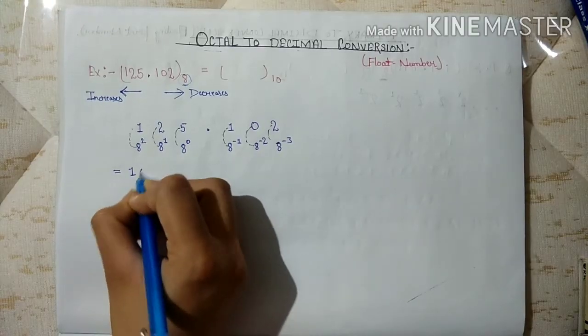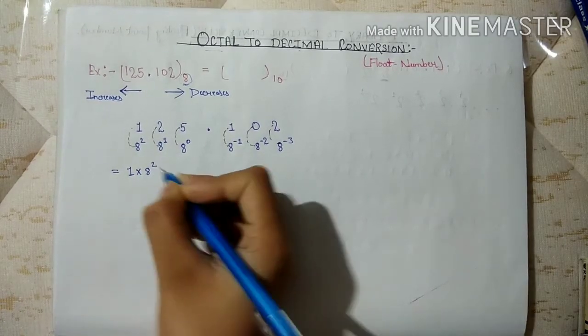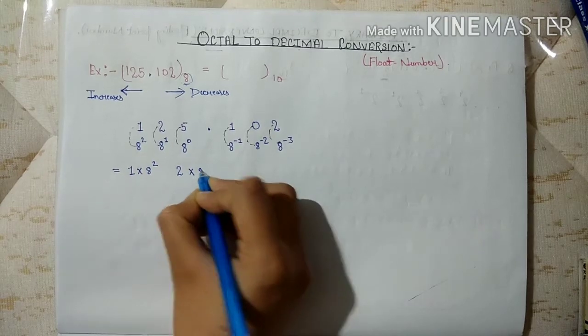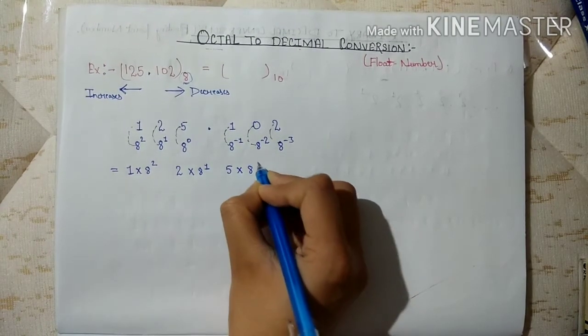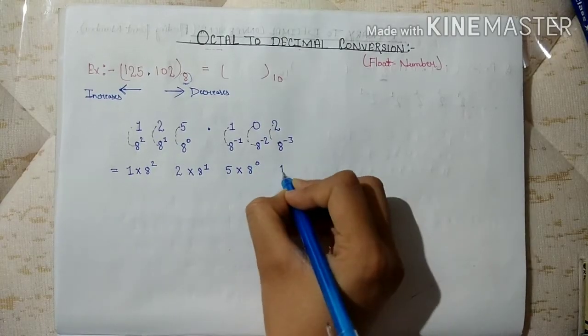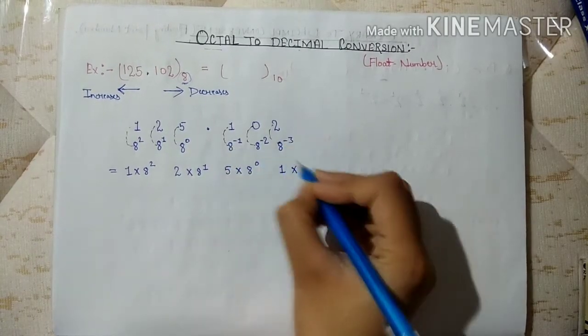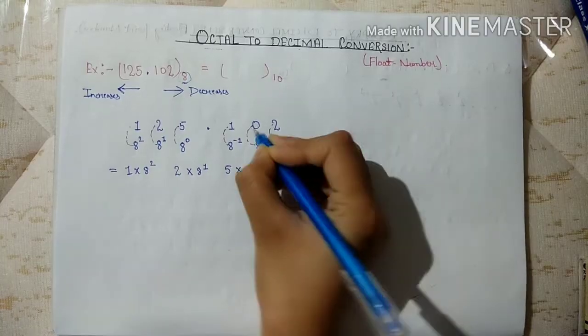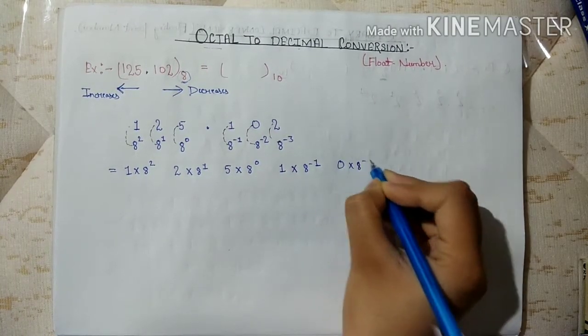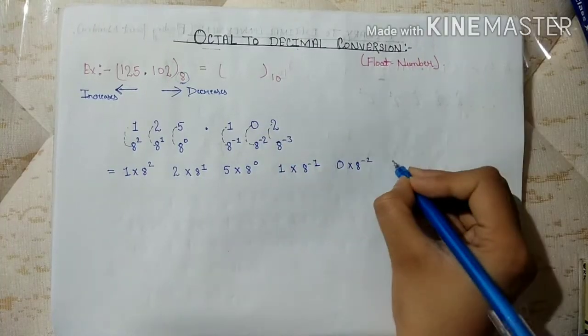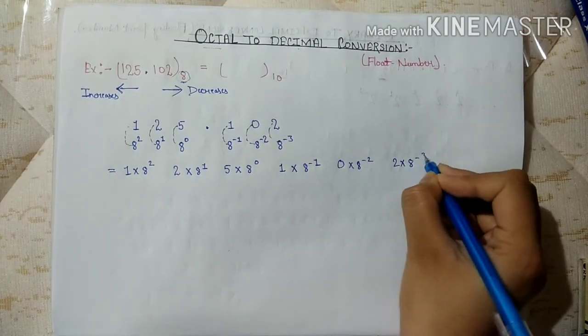1 into 8 to the power 2, 2 into 8 to the power 1, 5 into 8 to the power 0, 1 into 8 to the power minus 1, 0 into 8 to the power minus 2, 2 into 8 to the power minus 3.